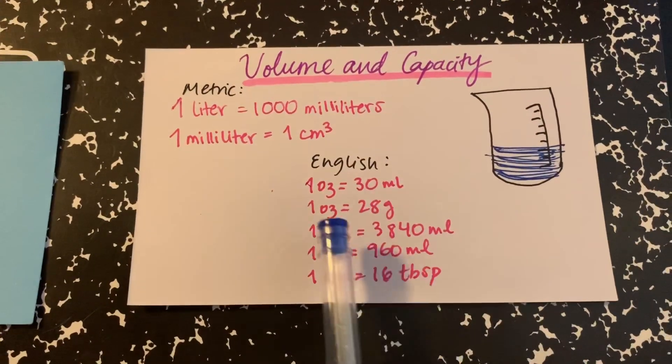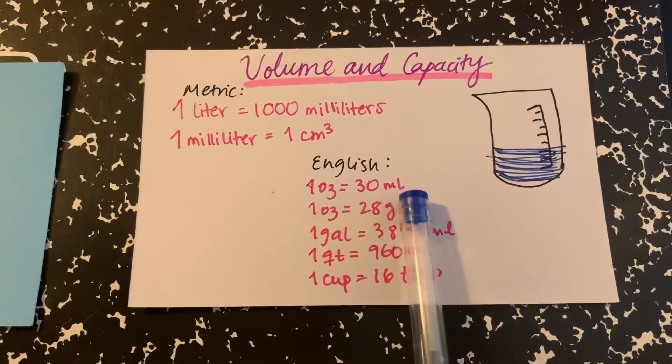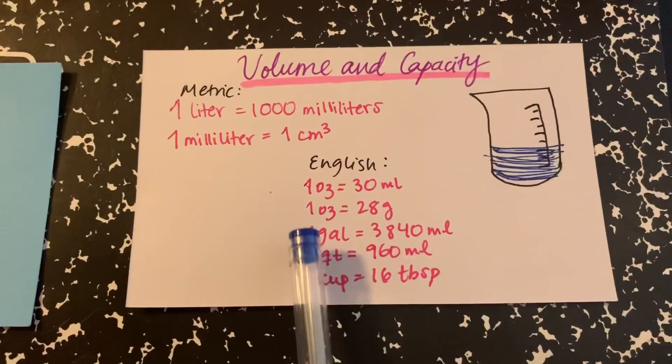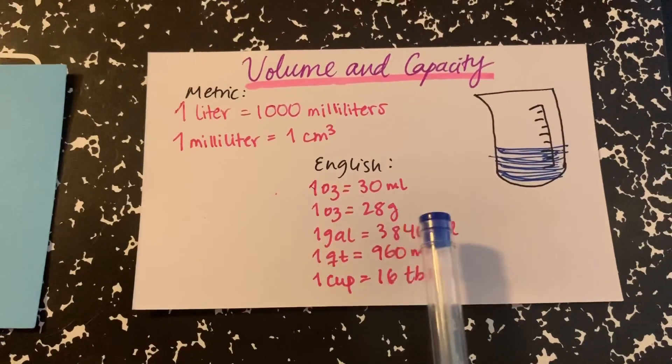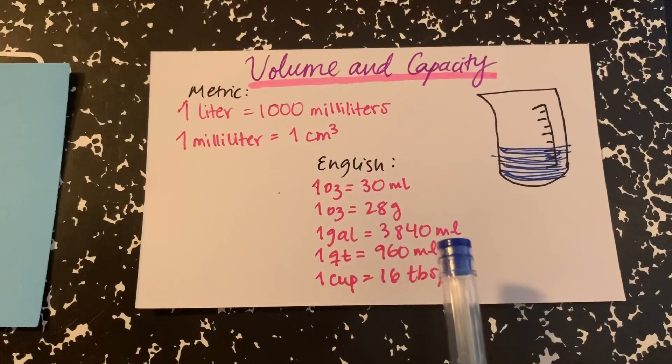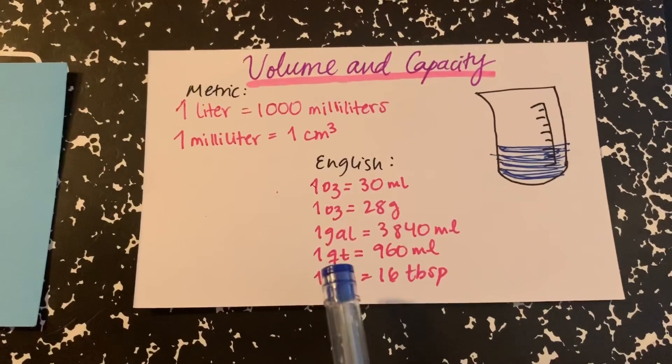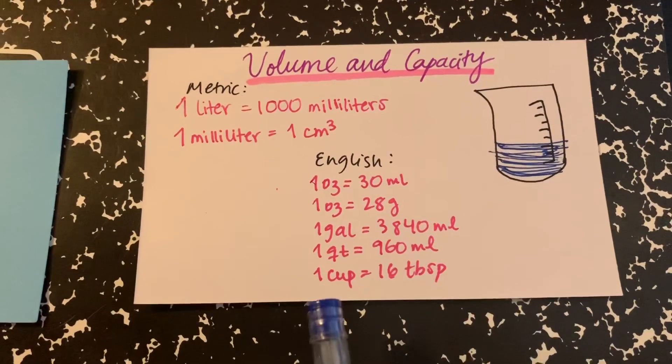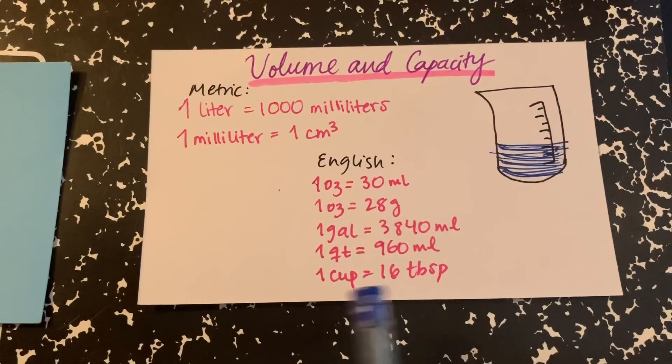And in the English, we have 1 ounce is equal to 30 milliliters, 1 ounce is equal to 28 grams, 1 gallon is equal to 3,840 milliliters, 1 quart is equal to 960 milliliters, and 1 cup is equal to 16 tablespoons.